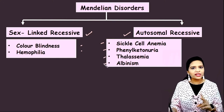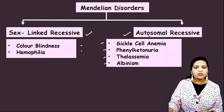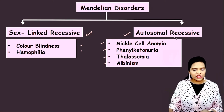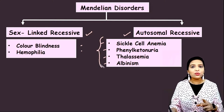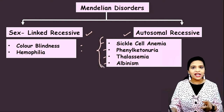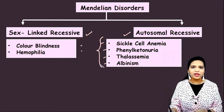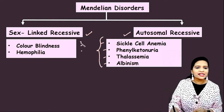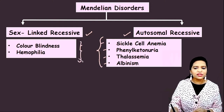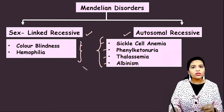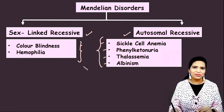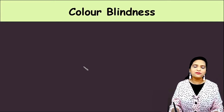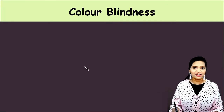When we look at both categories, autosomal recessive disorders appear in both genders — they affect males and females in equal frequency. Whereas sex-linked recessive disorders are most common among men than in females. Let's move on to the first recessive disorder, that is colorblindness.